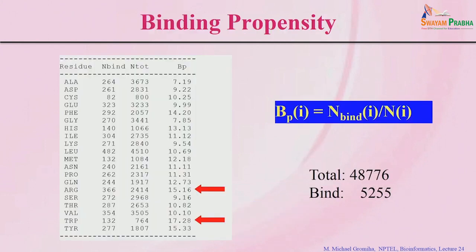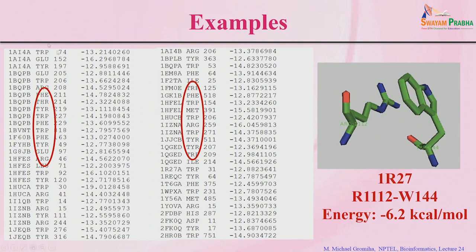Here is an example of how to get these interactions. In structure 1027, arginine 1112 and tryptophan 144 are shown to interact with an energy of minus 6.2 kcal/mol. The arginine carries a positive charge and tryptophan has an aromatic ring, so they make cation-pi interactions — this is the pi system interacting with the positive charge.